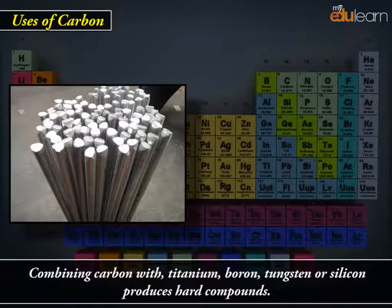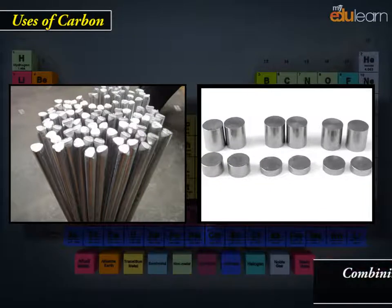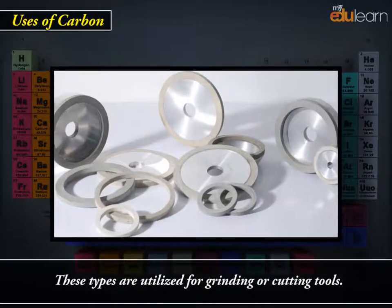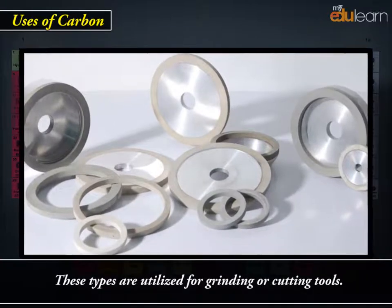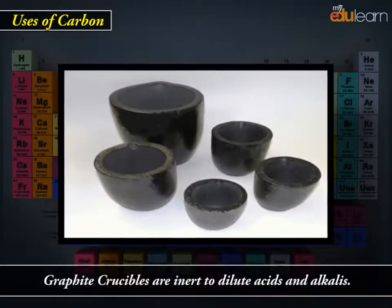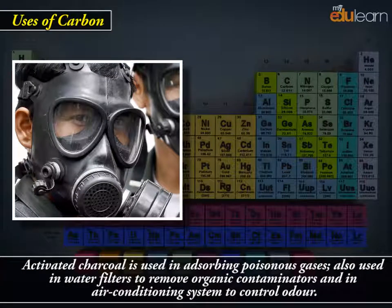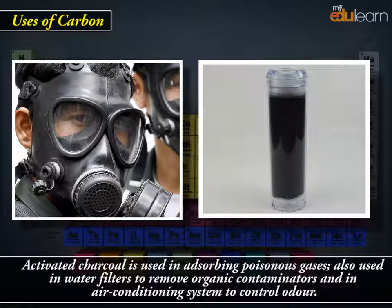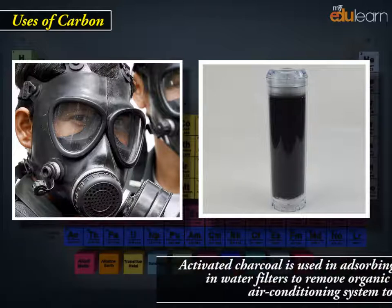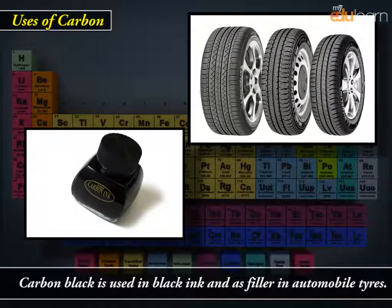Combining carbon with titanium, boron, tungsten or silicon produces hard compounds. These types are utilized for grinding or cutting tools. Graphite crucibles are inert to dilute acids and alkalis. Activated charcoal is used in adsorbing poisonous gases, also used in water filters to remove organic contaminants and in air conditioning systems to control odour. Carbon black is used in black ink and as filler in automobile tyres.